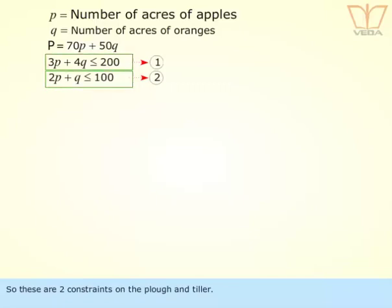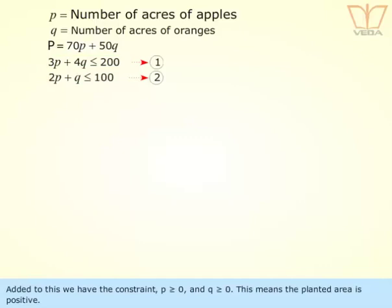So these are two constraints on the plough and tiller. Added to this, we have the constraint p is greater than or equal to 0 and q is greater than or equal to 0. This means the planted area is positive.